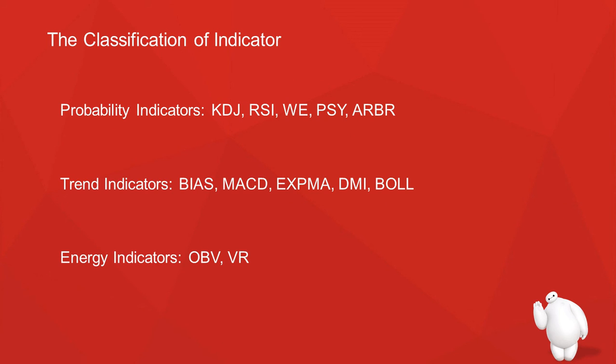The classification of indicators: probability indicators include KDJ, RSI, Williams (WR), PSY, AR, BR. Trend indicators include BRAS, MACD, EXPMA, EMI, BOLL. Energy indicators include OBV and VR. We cannot use KDJ and RSI together because they both belong to probability indicators. We also cannot combine BRAS with MACD. But we can combine KDJ with MACD, or RSI with DMI, because they are from different classifications.